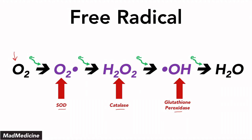One thing to remember is that not only do we have these scavenging enzymes, but bacteria also have them — specifically catalase, which is very important. Some bacteria have the ability to negate or reduce the effect of hydrogen peroxide because they are catalase positive. So when white blood cells go through oxidative burst, those catalase-positive bacteria will not get killed by free radical injury.